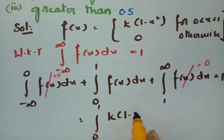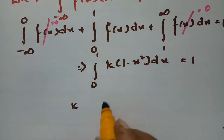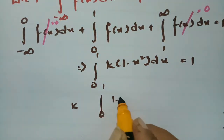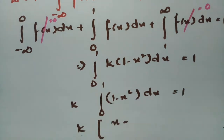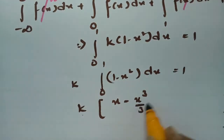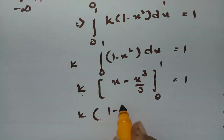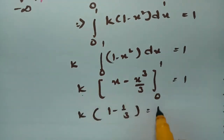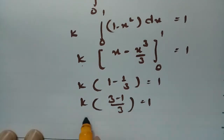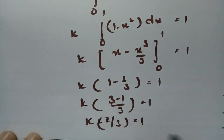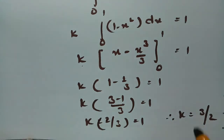So we have the integral from 0 to 1 of k(1 - x²) dx = 1. Taking k as a constant, the integral of 1 dx is x and the integral of x² is x³/3, evaluated between 0 and 1. Substituting the upper limit: k times (1 - 1/3) = 1, giving k × (2/3) = 1, therefore k = 3/2.